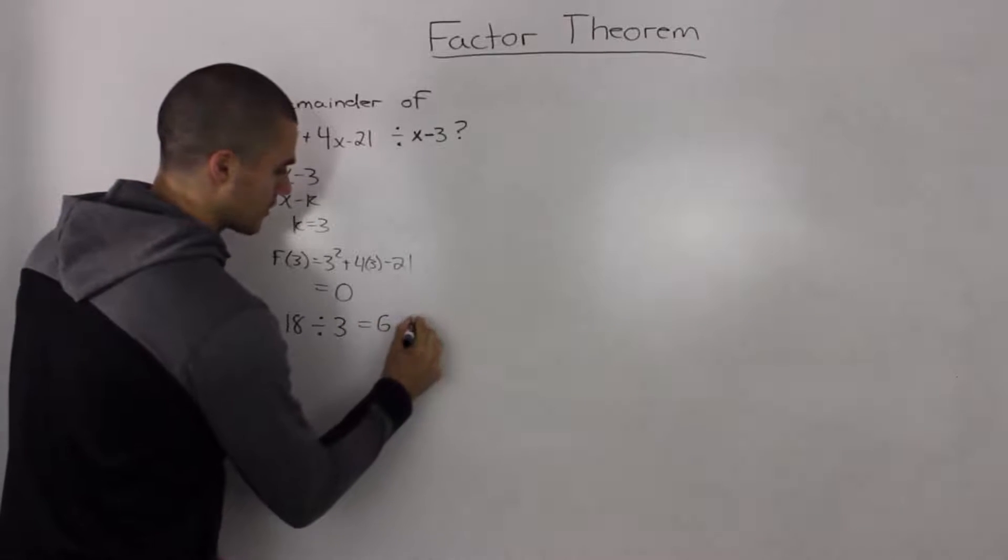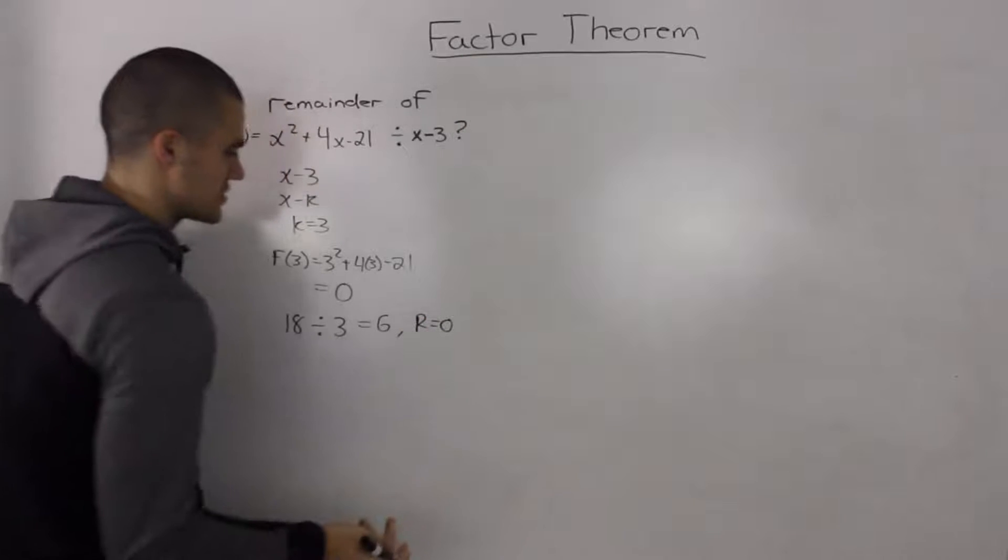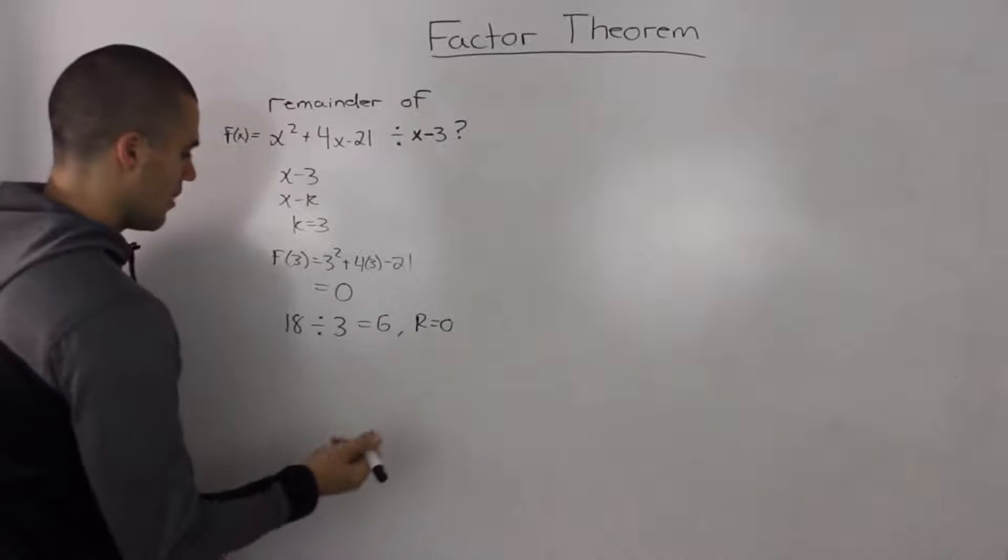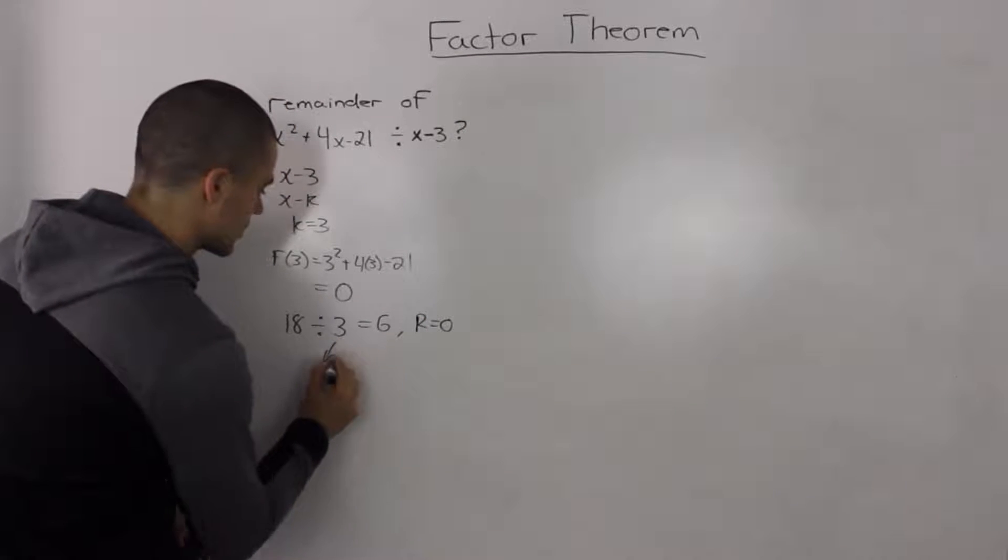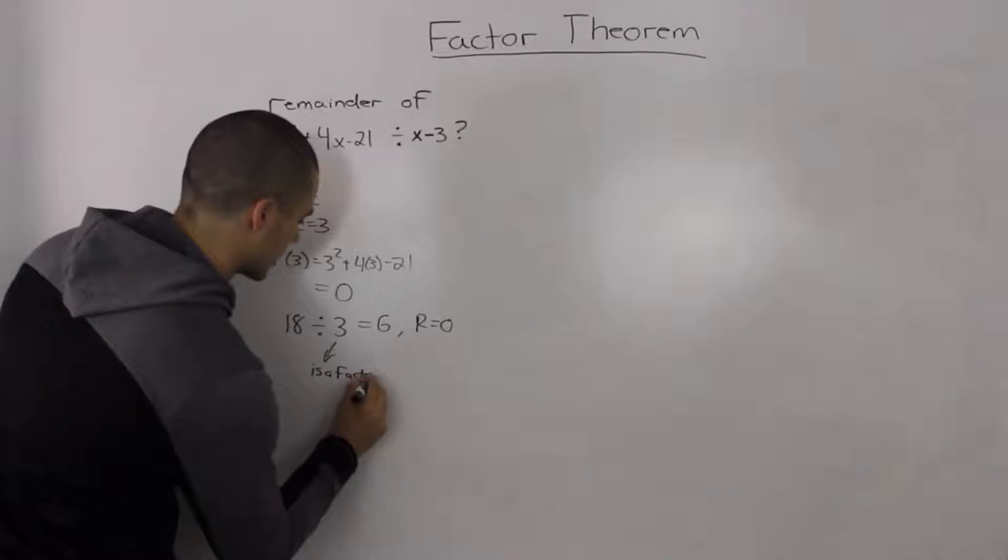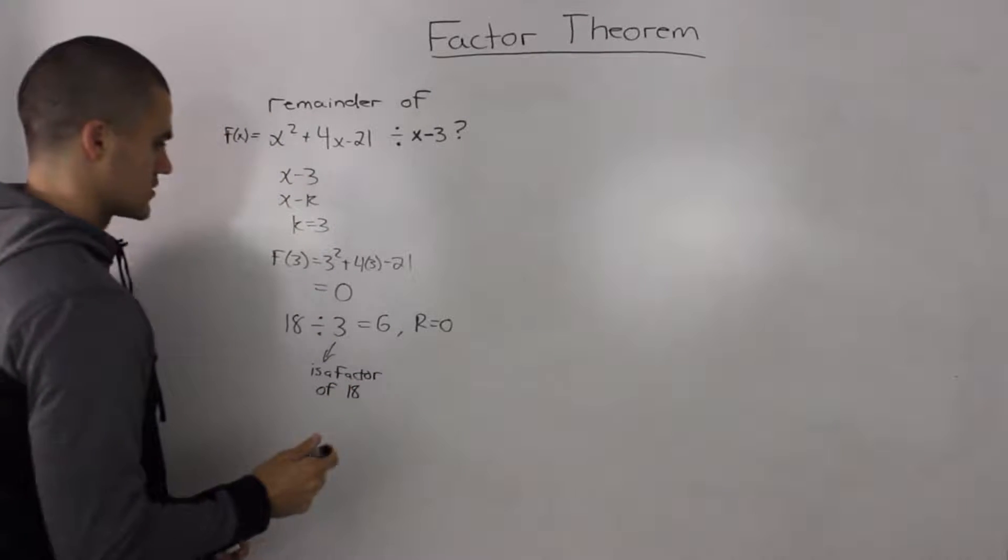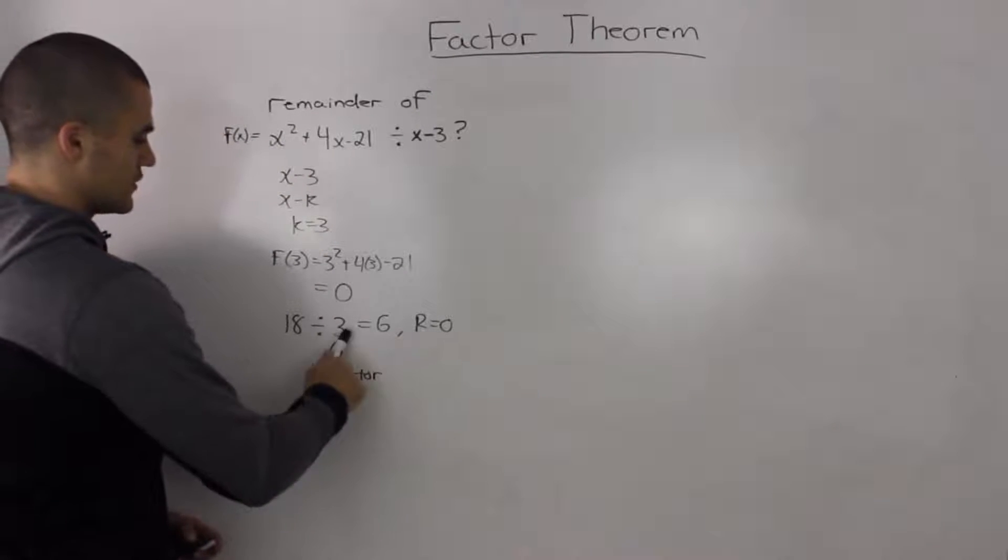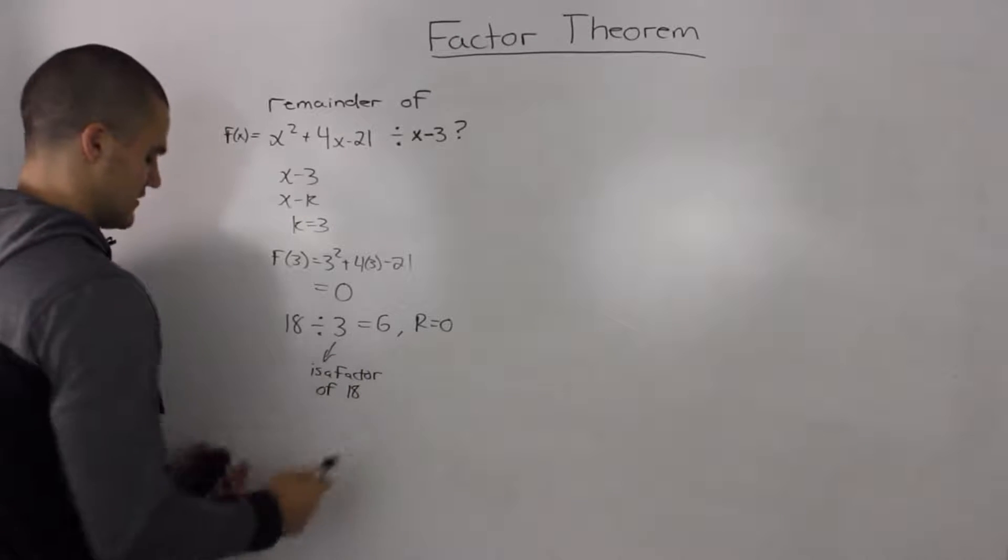The remainder is 0. So all that means is that 3 is a factor of 18. Whenever you get a remainder of 0, the divisor is a factor of the dividend.